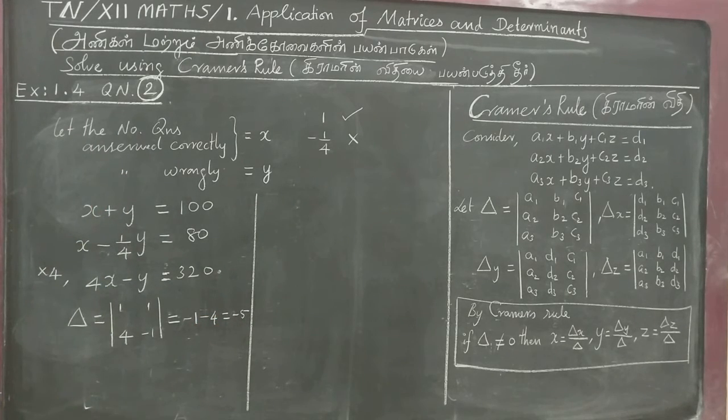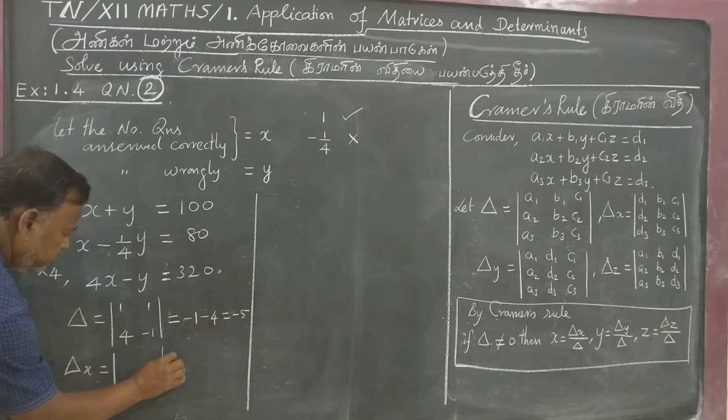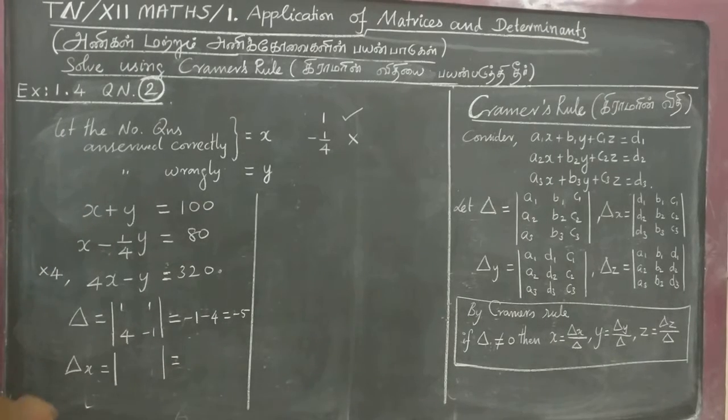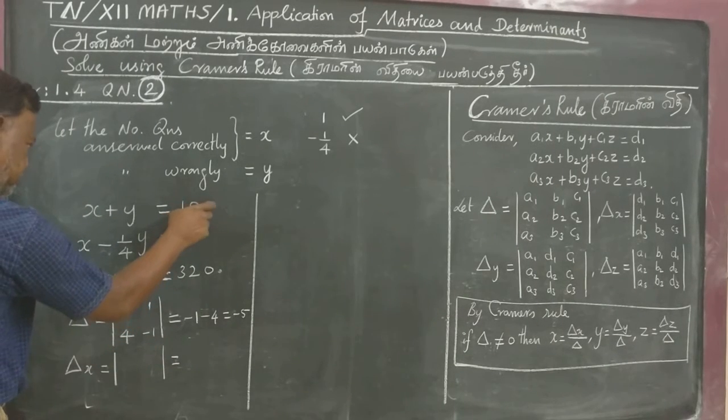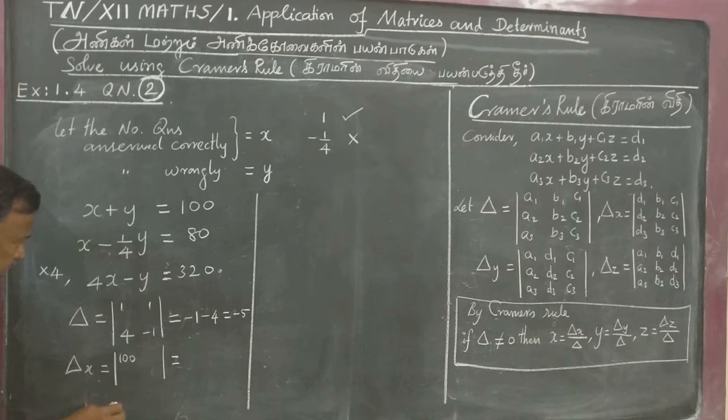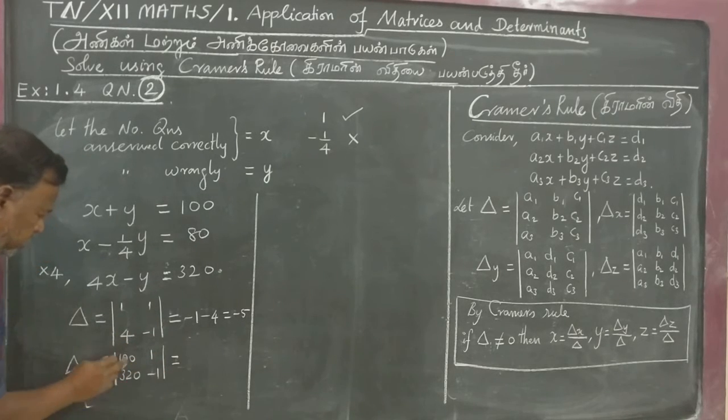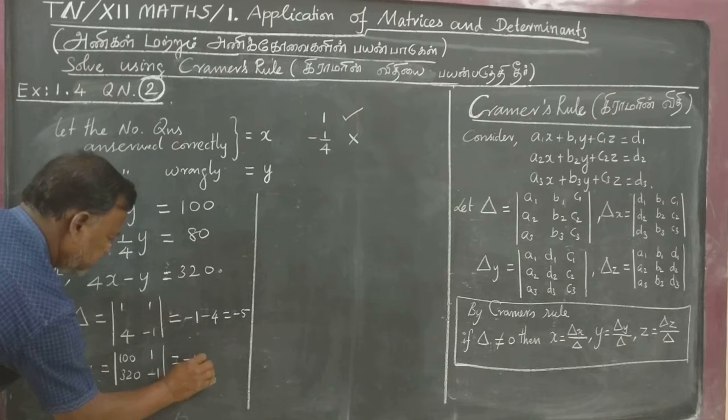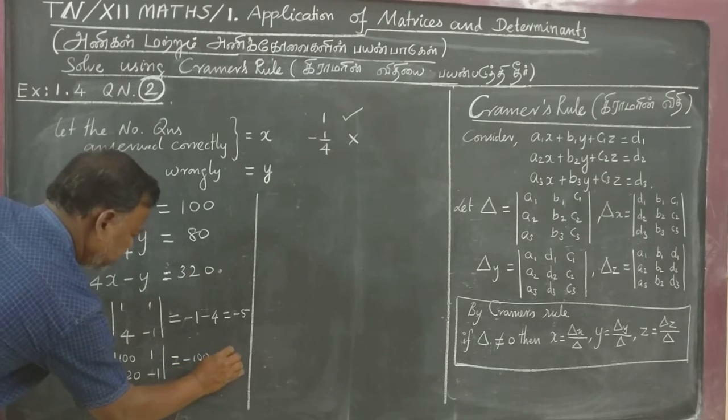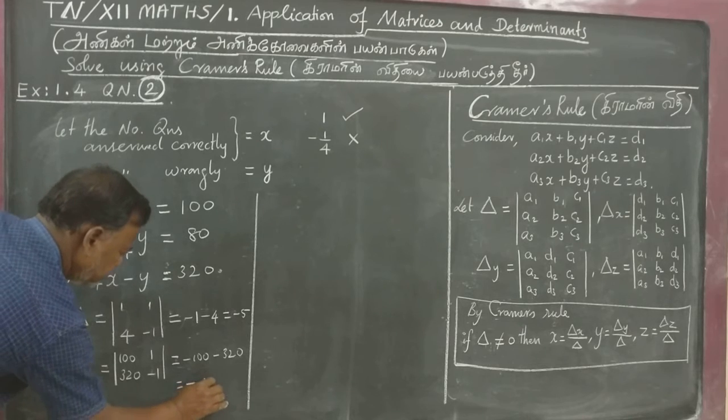Then find delta x. For delta x, this is 100, 320; 1, minus 1. Multiply minus 1 minus 320 is equal to minus 400.